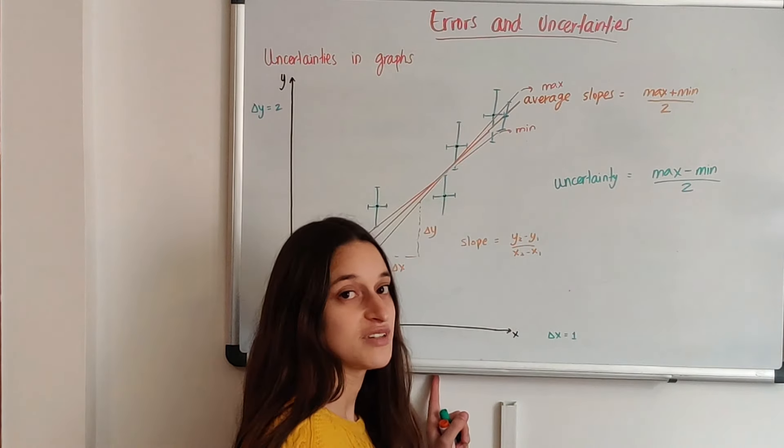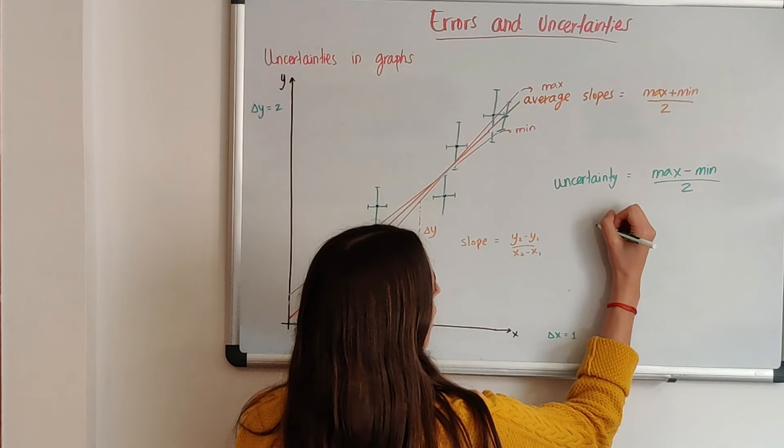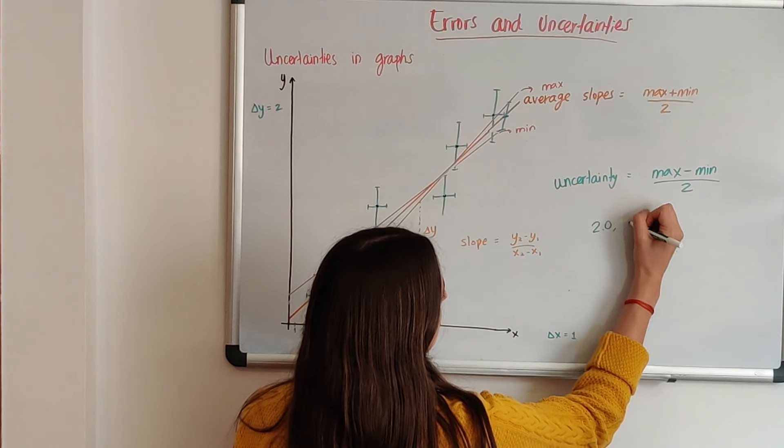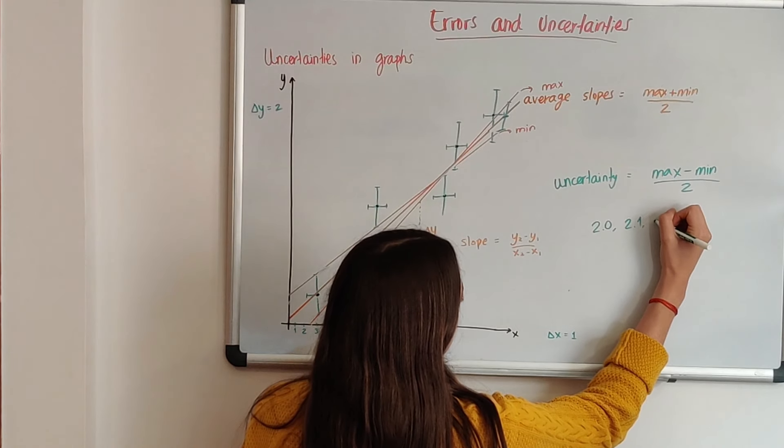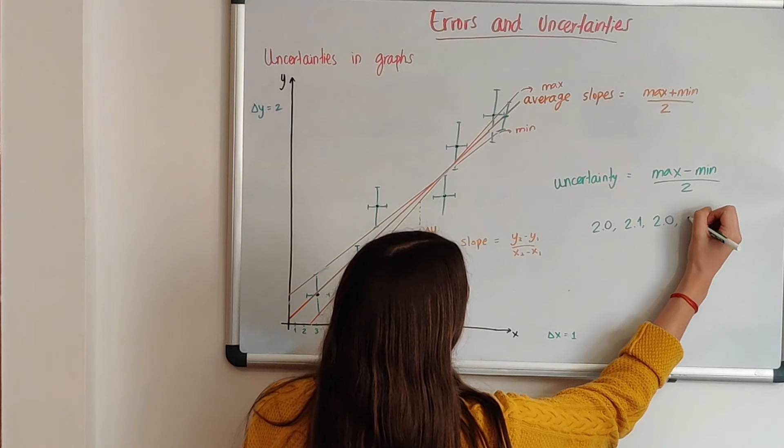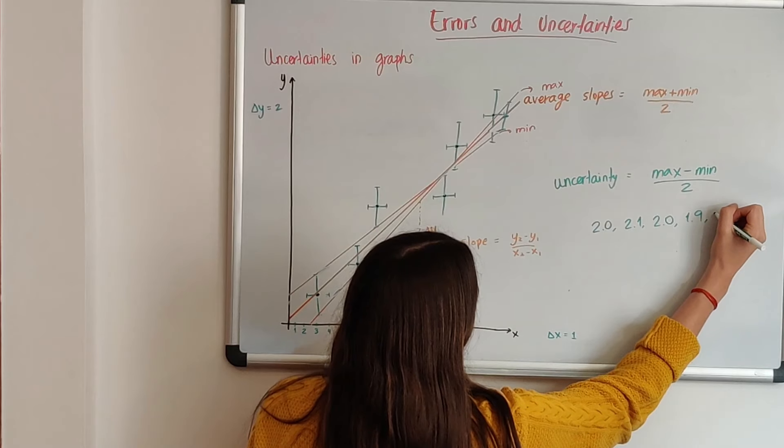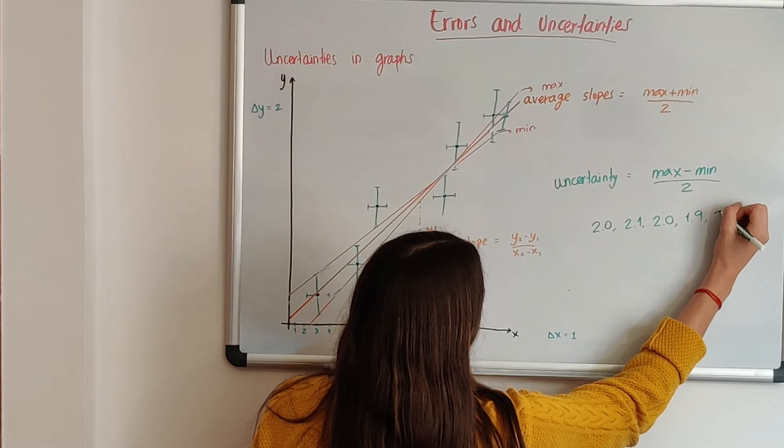So if you took, let's say, the same measurement in five different trials and you got 2.0, 2.1, 2.0, 1.9, and 2.0.